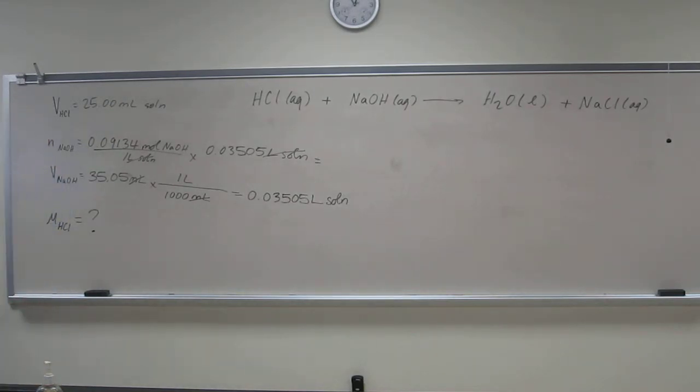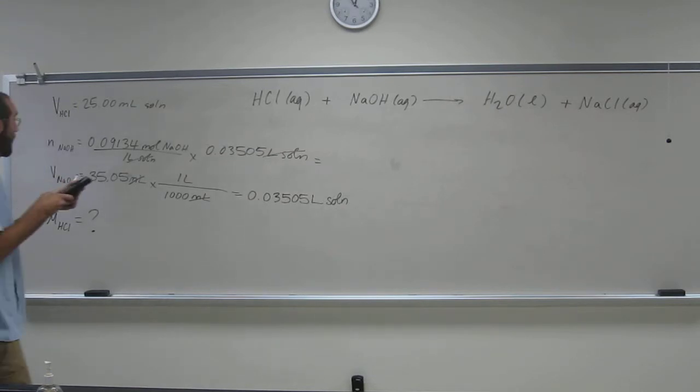So let's figure out the number of moles of NaOH. It's 6.78 times 10 to negative 4. This is ratios.